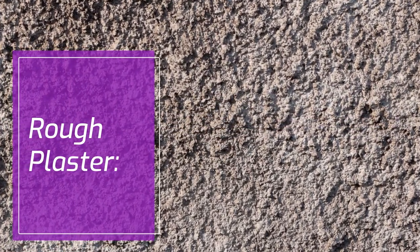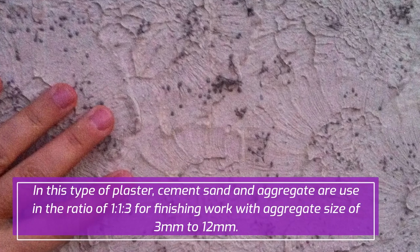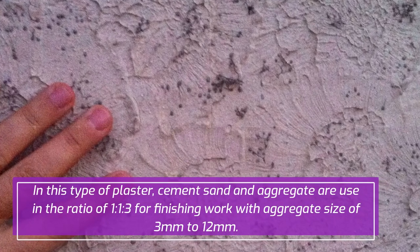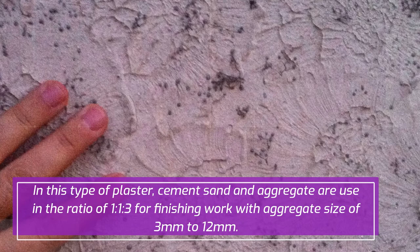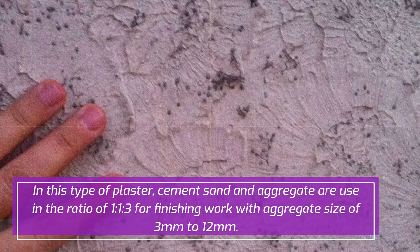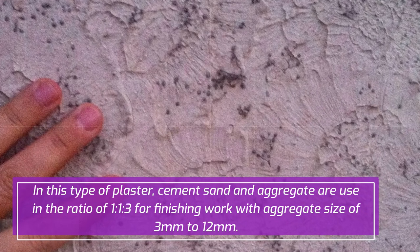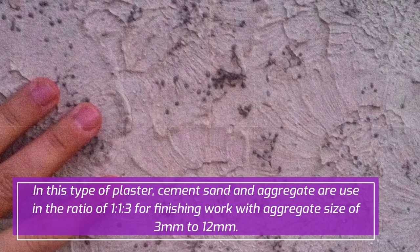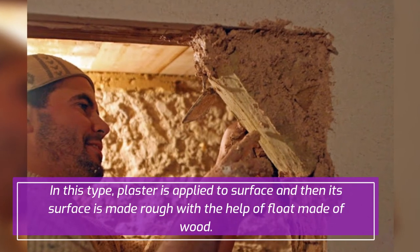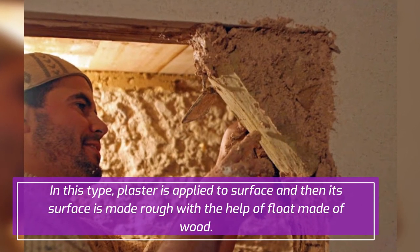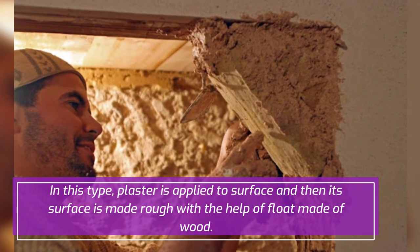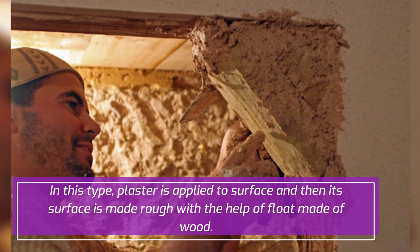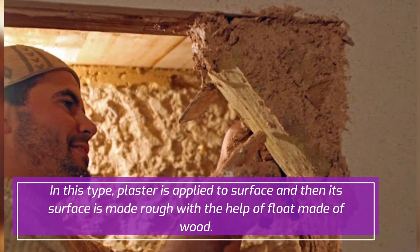Rough Plaster: In this type of plaster, cement, sand and aggregate are used in the ratio of 1:1:3 for finishing work, with an aggregate size of 3mm to 12mm. Plaster is applied to the surface and then its surface is made rough with the help of a float made of wood.